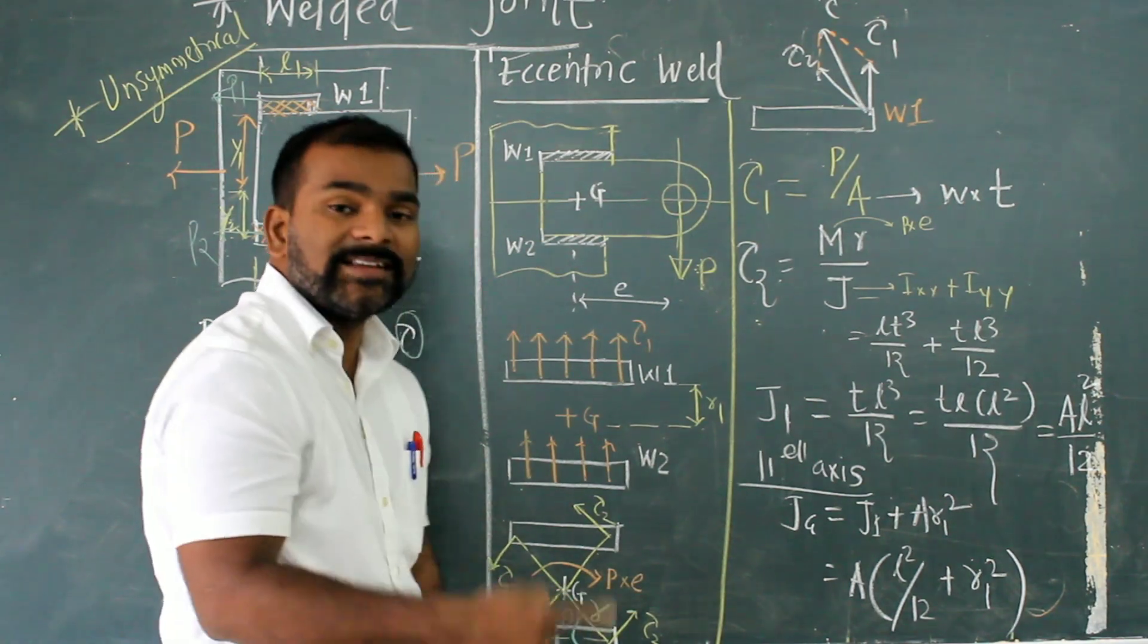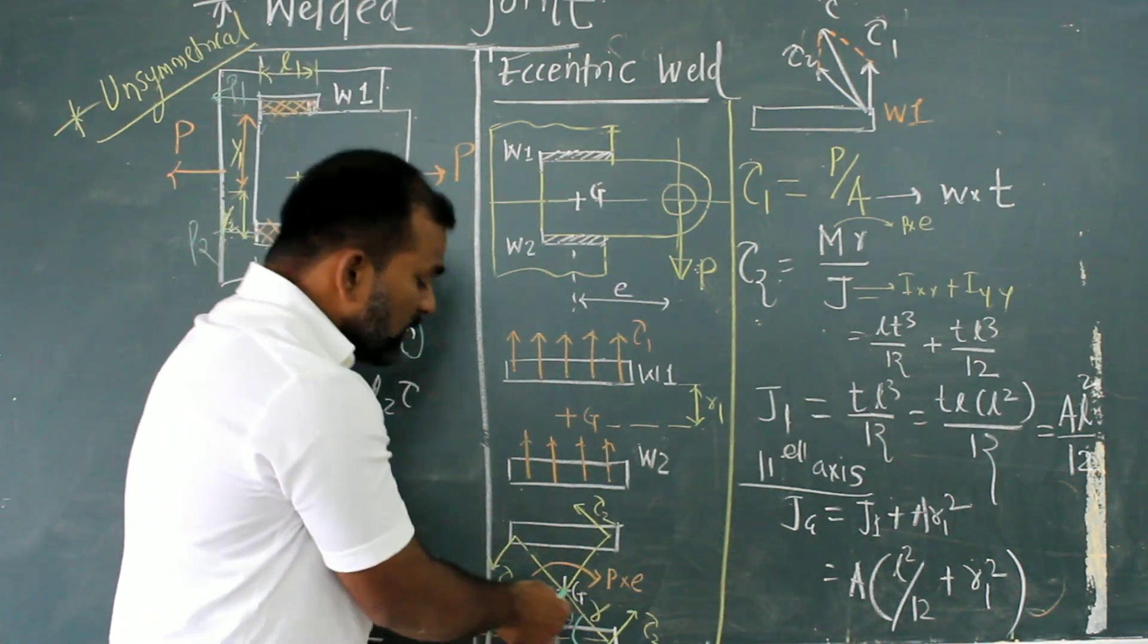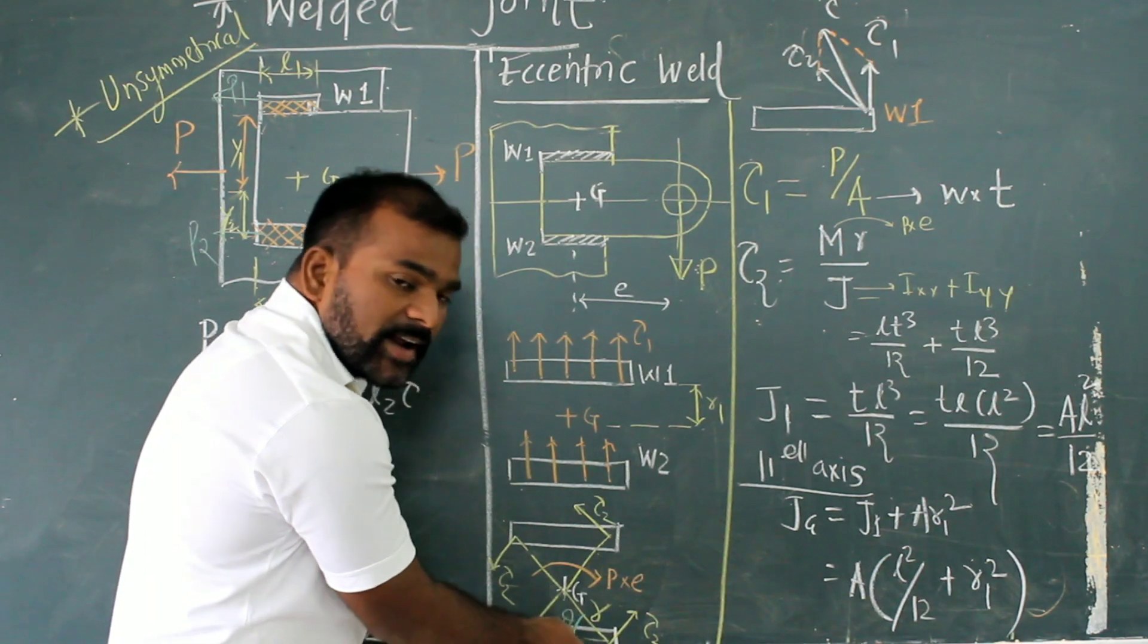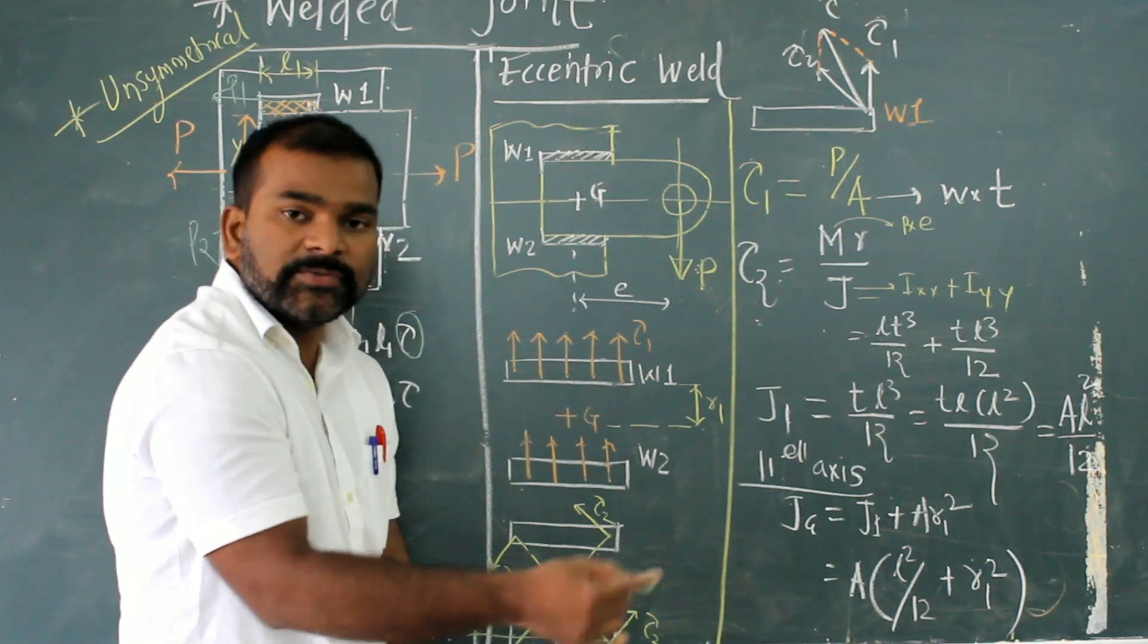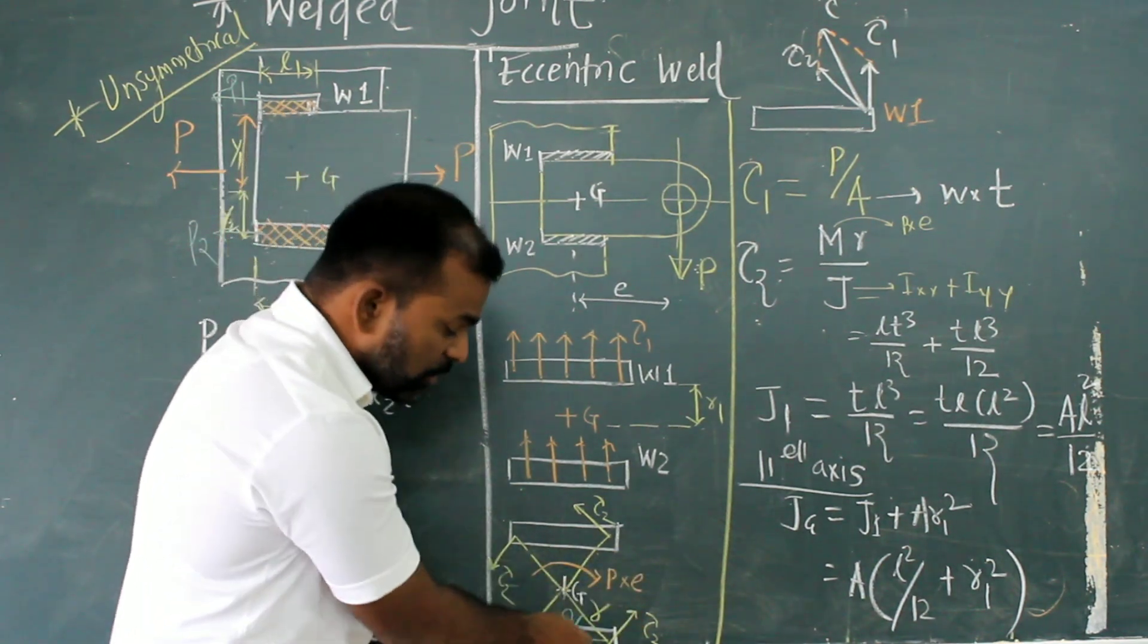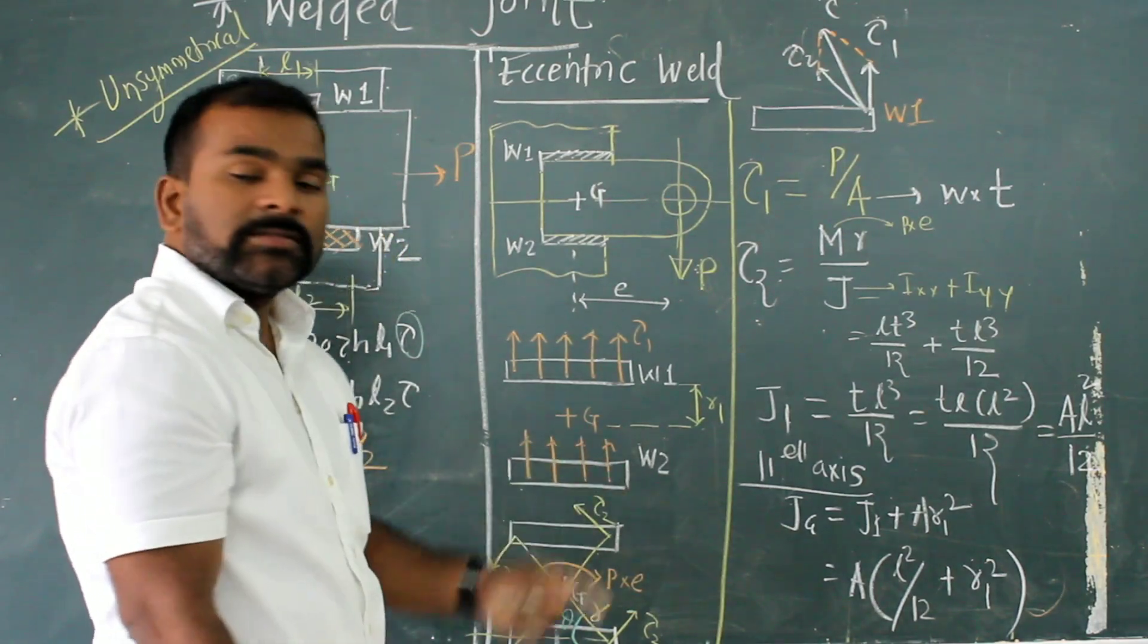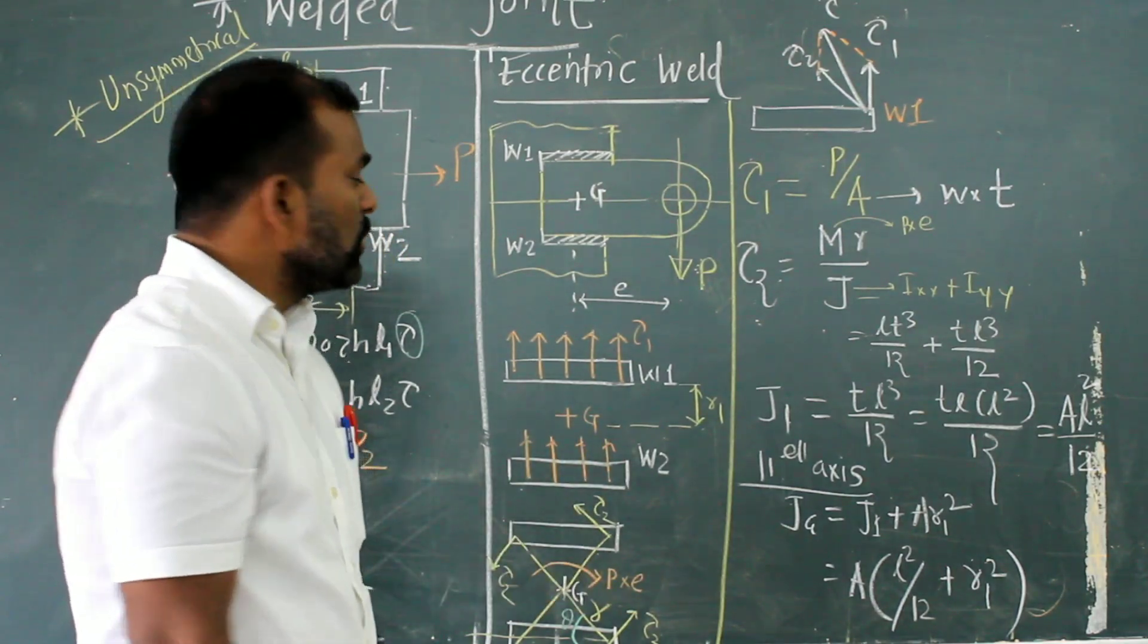This distance we have considered is R. And by that we can calculate R distance by the angle. This is the angle. According to Pythagoras, we can calculate this distance also. Theta also we can calculate by this way. So now I can tell you how we can formulate it.